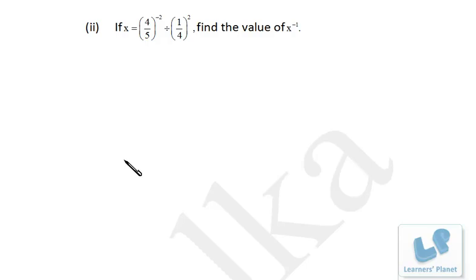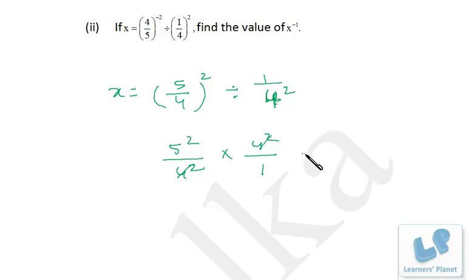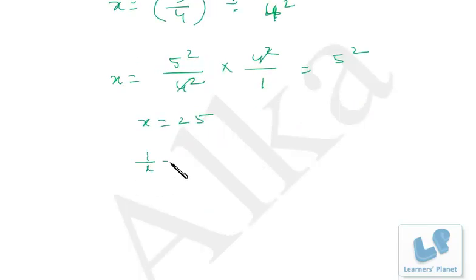Now here we have to find x raised to minus 1. First let's calculate x. Since the power is negative, we take the reciprocal: x raised to minus 1 divided by 1/4 squared, that is 16. So it's 5 squared over 4 squared multiplied by 4 squared over 1. So it's 5 squared, meaning x equals 25. So 1 over x, which is x raised to minus 1, equals 1/25.